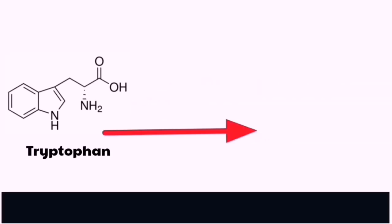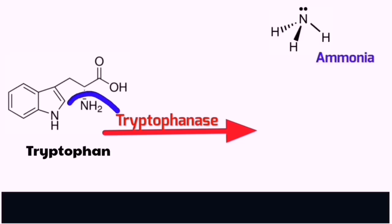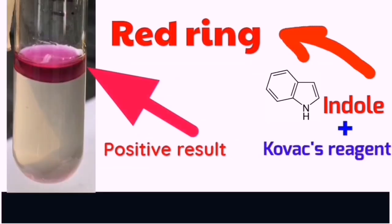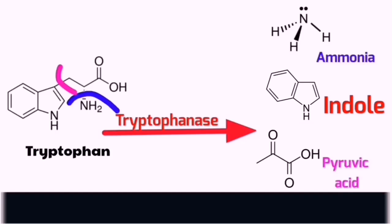Some bacteria produce an enzyme called tryptophanase which hydrolyzes tryptophan into ammonia, pyruvic acid, and indole. This byproduct indole gives a red ring when exposed to Kovacs reagent, and it's a very good indication that the microorganism can produce tryptophanase enzyme.